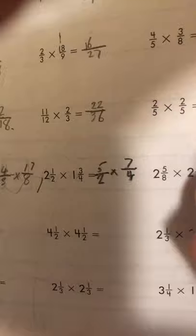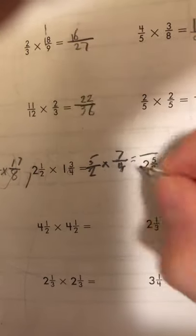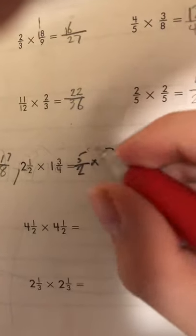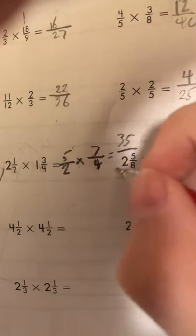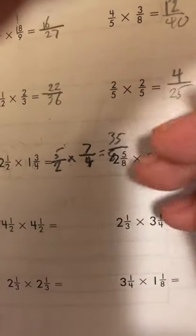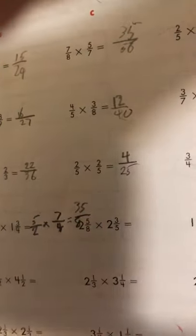And then you just times the top, which is 35, and multiply the bottom, 2 and 8, and there you have it, 35 over 8, and then you're done.